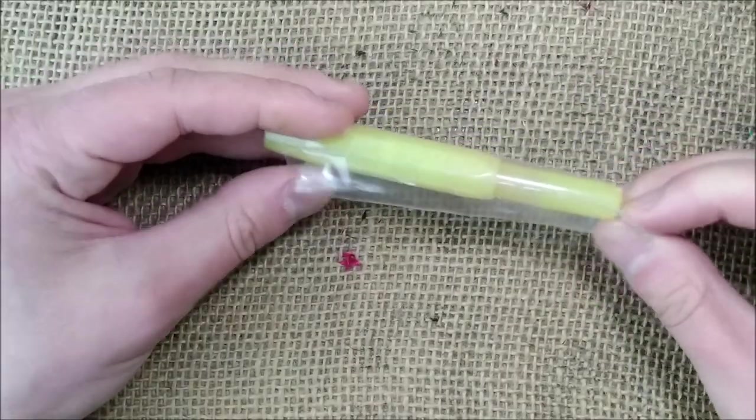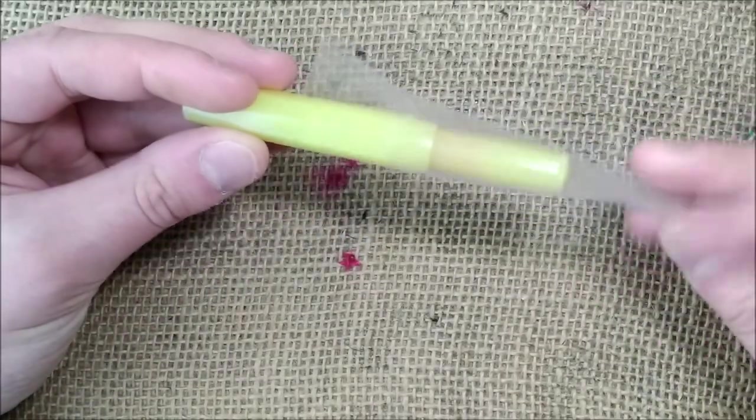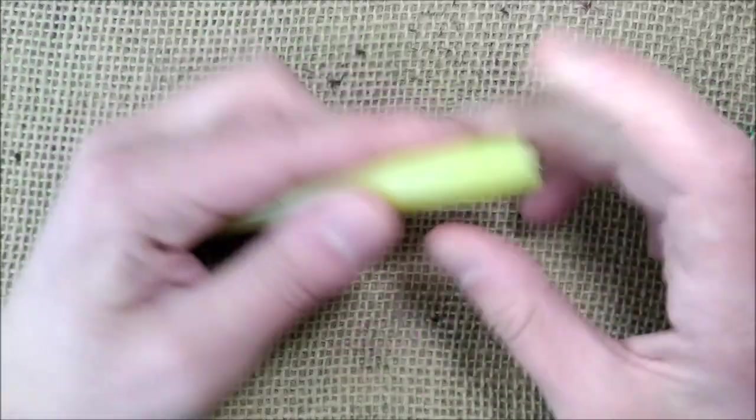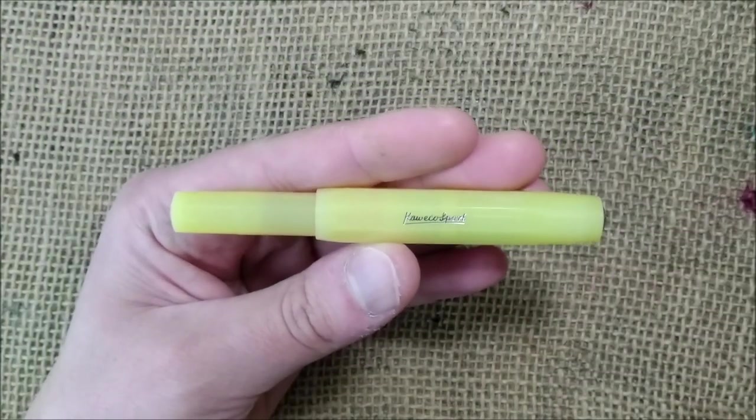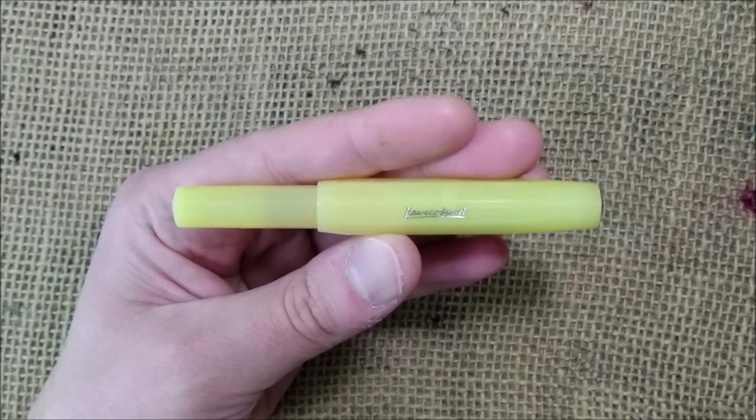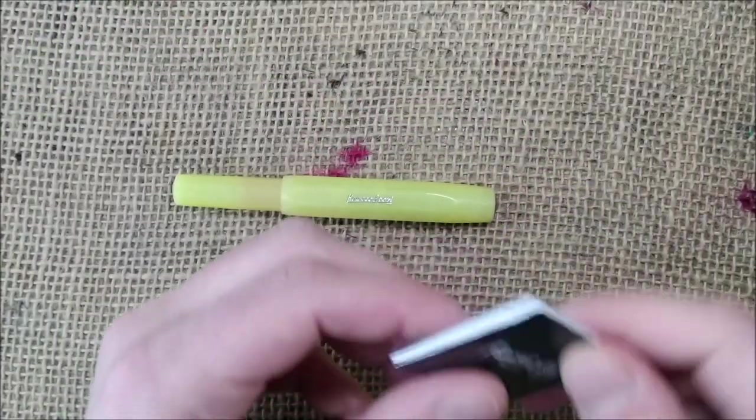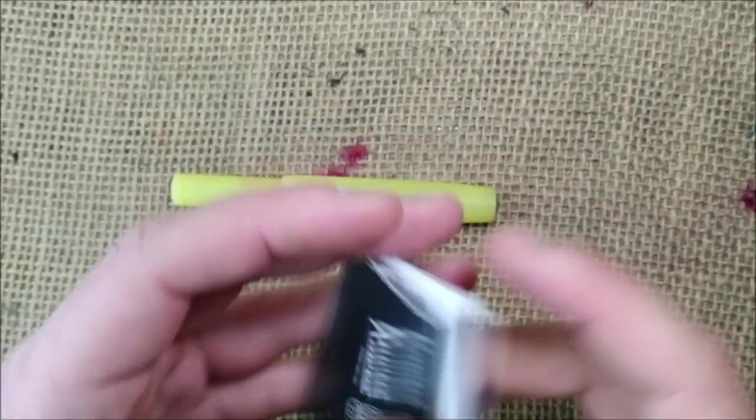When we take it out it comes inside this plastic wrap and here it is. This is the Kaweco Frosted Sport Sweet Banana. It also comes with the usual little leaflet by Kaweco with the story of the brand, the history of the brand and the little sticker.